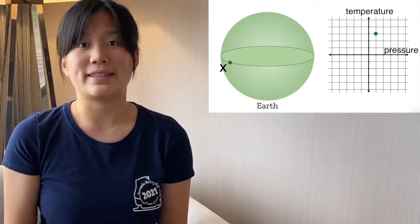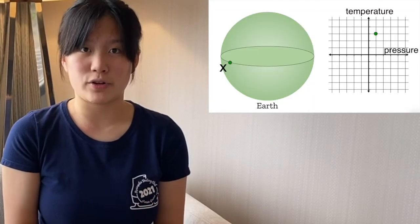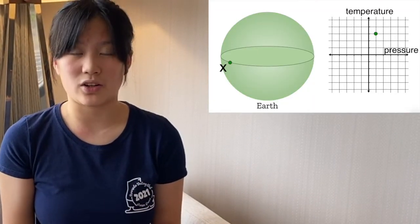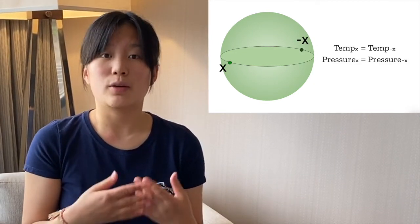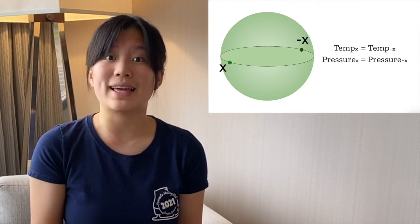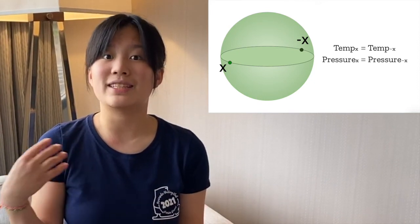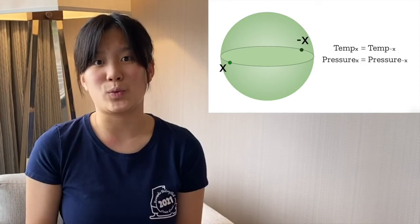let F(X) output the pressure and temperature at a location X on the Earth. For at least one point X on the Earth, the pressure and the temperature will be the exact same as location negative X halfway around the world. Going back to our ham sandwich,